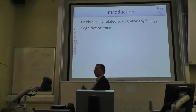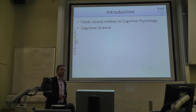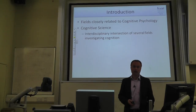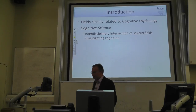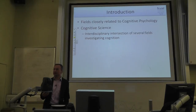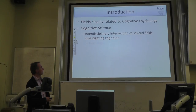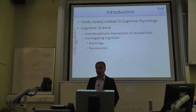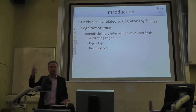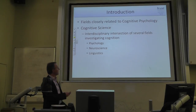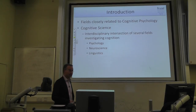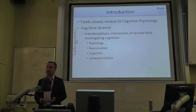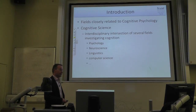Then there is cognitive science — a broader interdisciplinary field. Basically, everybody involved in cognition is here: psychology, neuroscience from cellular to systems level, linguistics for language, computer science for modeling artificial networks, and potentially many more.